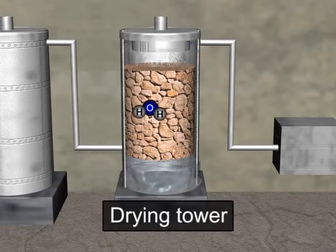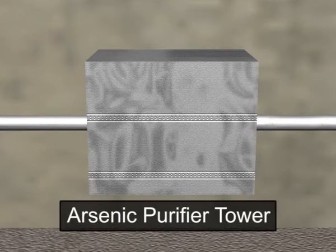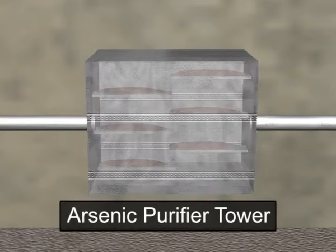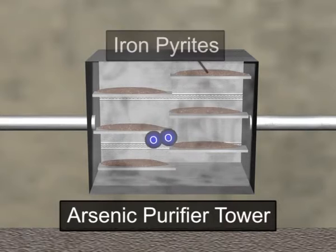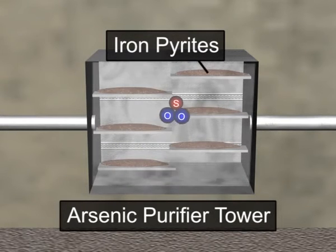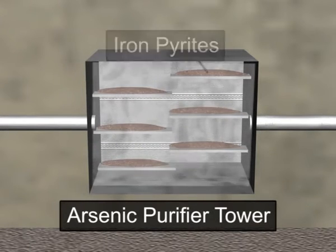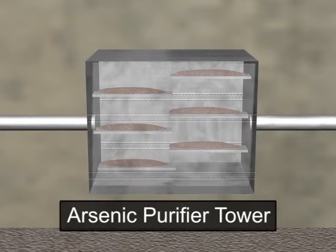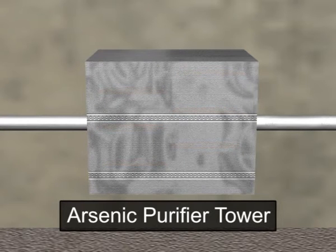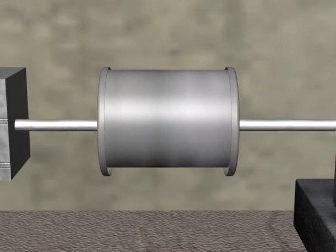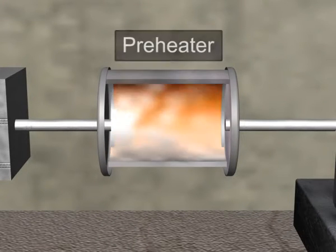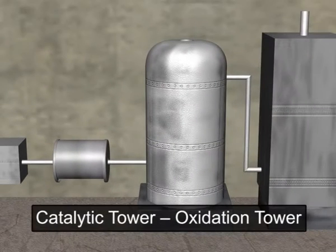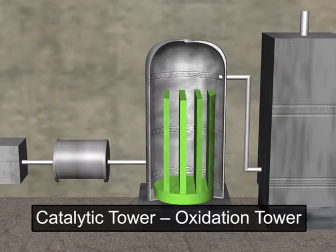Dry sulfur dioxide and oxygen are then passed to the arsenic purifier tower, which contains iron pyrites — actually hydrated ferric oxide — where further purification of the gas takes place. The mixture of dry sulfur dioxide and oxygen is then passed through a preheater to heat the gases. They are then fed into a catalytic converter, where oxidation of sulfur dioxide to sulfur trioxide takes place.